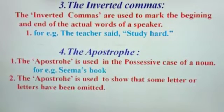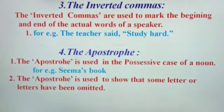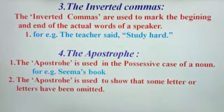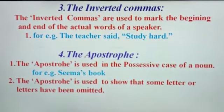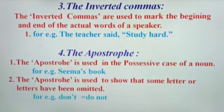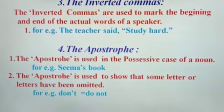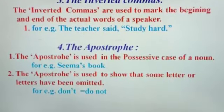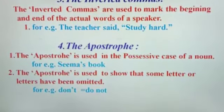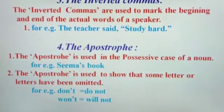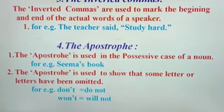The apostrophe is also used to show that some letter or letters have been omitted. For example, 'don't' means 'do not', and 'won't' means 'will not'.